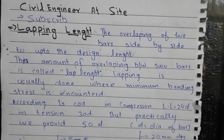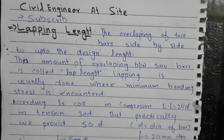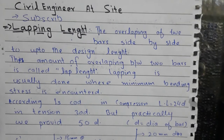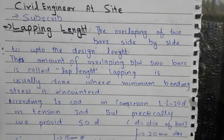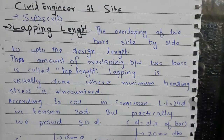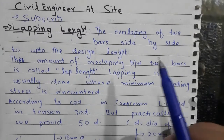Let's start our topic. Here we will discuss the lapping length or overlapping of steel bars. When we take steel bars for a column, beam, or slab, the length is around 12 meters. We cannot put the whole bar in the column, so we divide it into parts. Also, if we want to extend our building to a multi-story building, we need to extend all the columns, so we provide lapping of steel bars to get the desirable length.